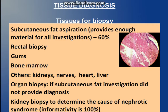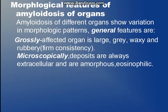If there is nephrotic syndrome in the patient, we can use kidney biopsy to determine the cause. Now going to the morphological features of amyloidosis in various organs. All organs have some features in common: grossly, each organ will be large, gray, waxy, and rubbery with a firm consistency. On microscopy, the deposits will be extracellular, amorphous, and eosinophilic, as studied in the earlier video.